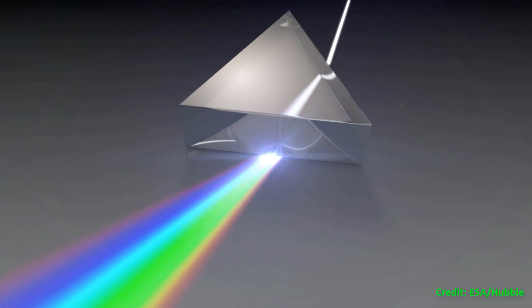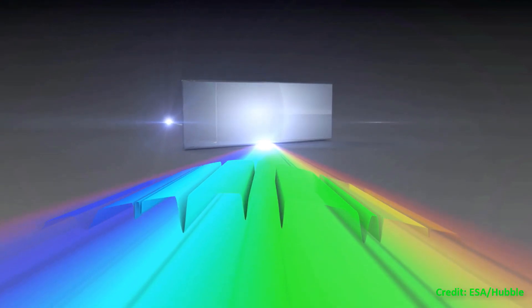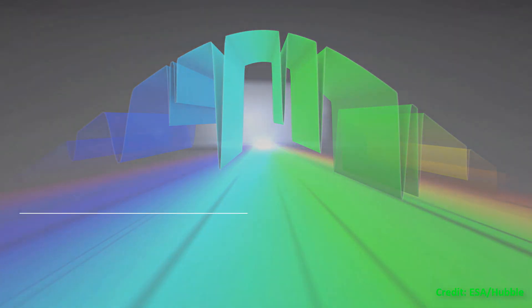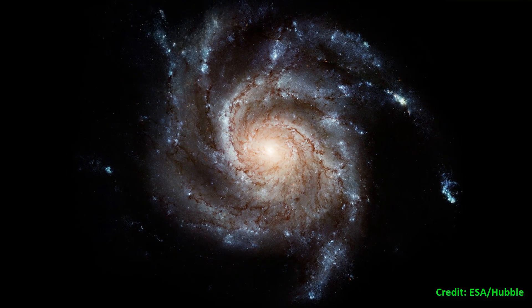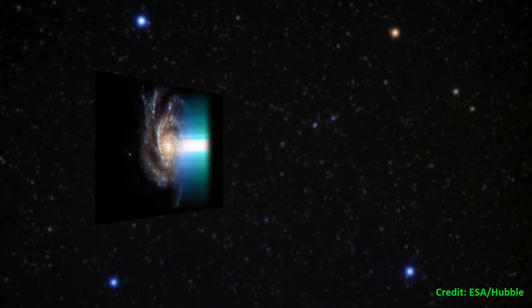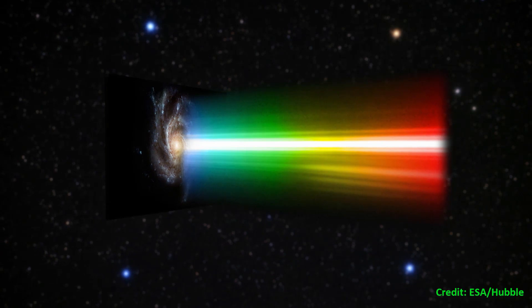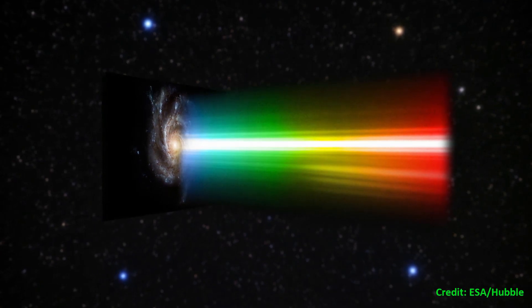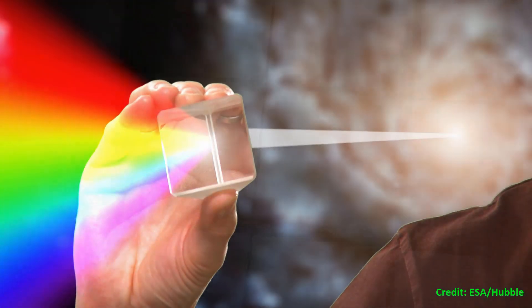Any object that absorbs or emits light can be studied with a spectrograph to determine characteristics such as its temperature, density, chemical composition and velocity. Once the light enters the spectrograph, it is split by a dispersive optical element into its different components, or wavelengths, in order to be studied. This element acts much like rain droplets that disperse the light to form a rainbow. This dispersed light is then focused onto a detector, and it is seen as a spectrum.